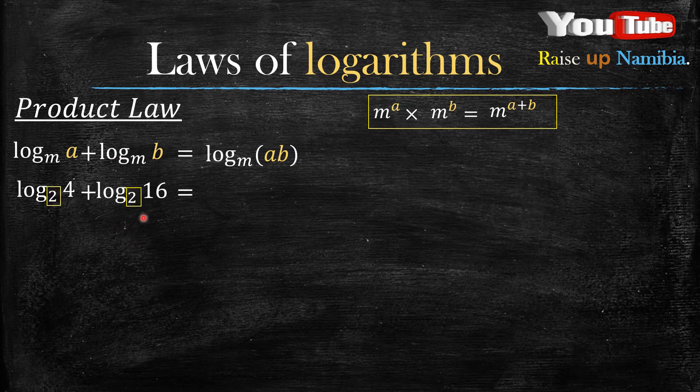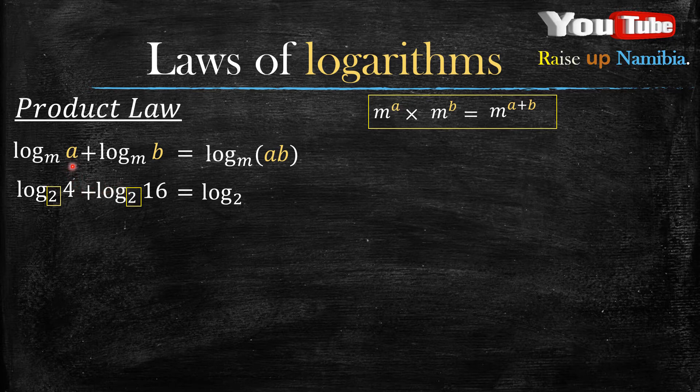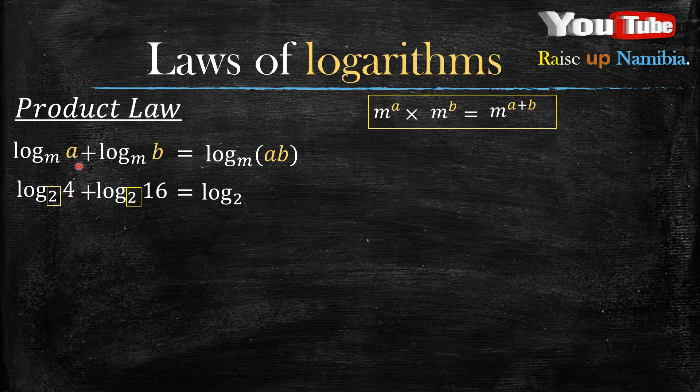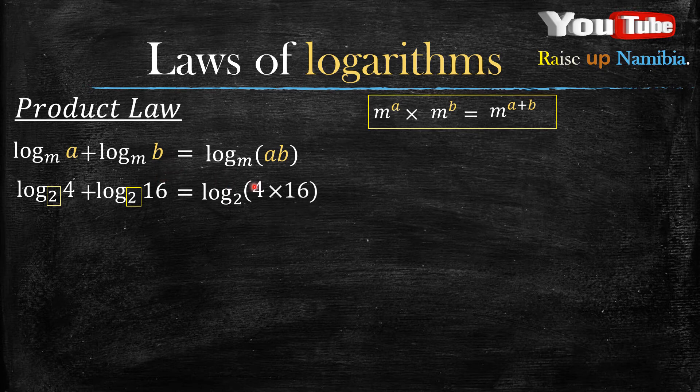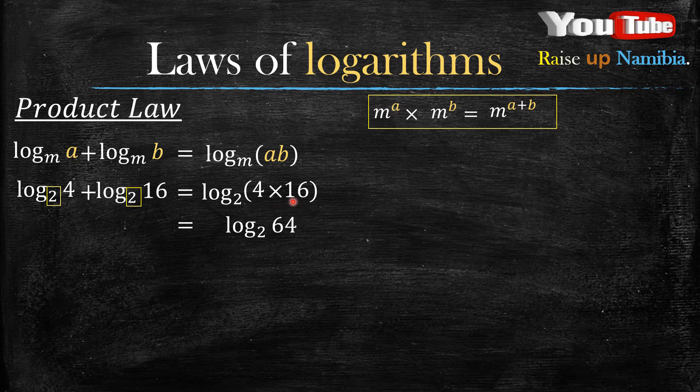Yes, we have base 2 on both sides, so your answer will have log base 2 as well. Look at your law: we have a here, which in our question is 4, and then we have b, which in our question is 16. We need to multiply this 4 with this 16. So the answer is log base 2 of 4 times 16, which gives you log base 2 of 64. That is your final answer.